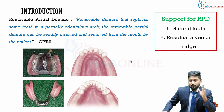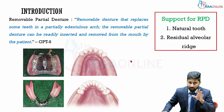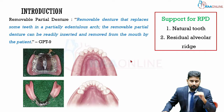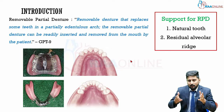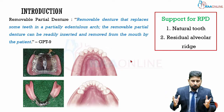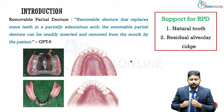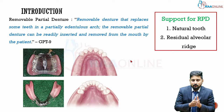A complete denture derives all its support from the soft tissue — it sits completely on soft tissue with no teeth present. The movement of a complete denture depends upon the resiliency of the soft tissue, how good the fit of the denture is, the occlusion, tooth arrangement, retention, and the denture-bearing area covered. But ultimately it all comes down to the resiliency of the soft tissue.